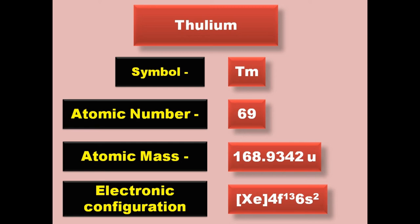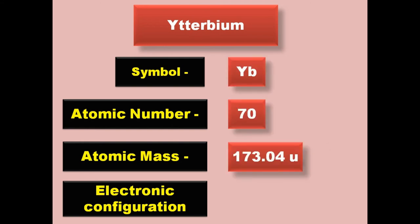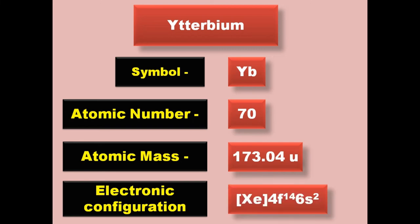Ytterbium has symbol Yb, atomic number 70, atomic mass 173.04, electronic configuration [Xe] 4f14 6s2. Ytterbium is a lanthanide and exists in solid form at room temperature.